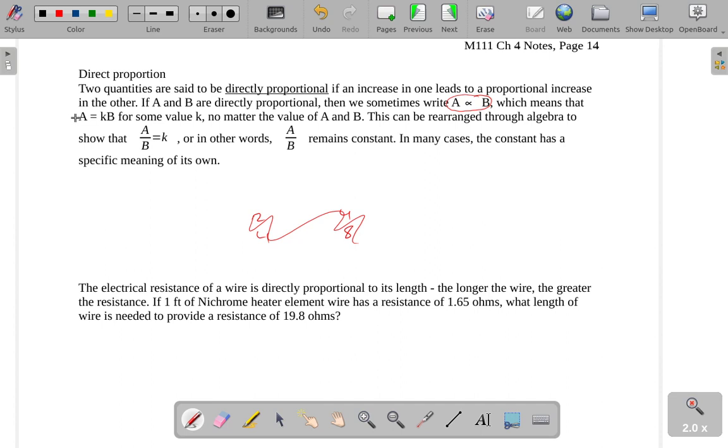Usually a more useful way of writing it is saying a is equal to some constant times b. Because of the origin of mathematics, when we're talking about a constant value, we often use the letter k. That goes back to German being a prominent language. But in any case, a equals some constant times b.